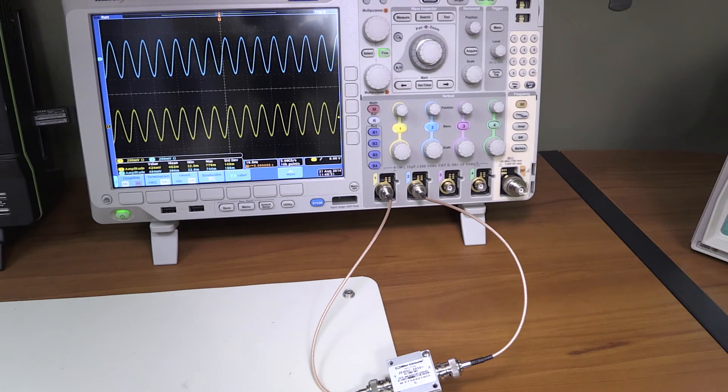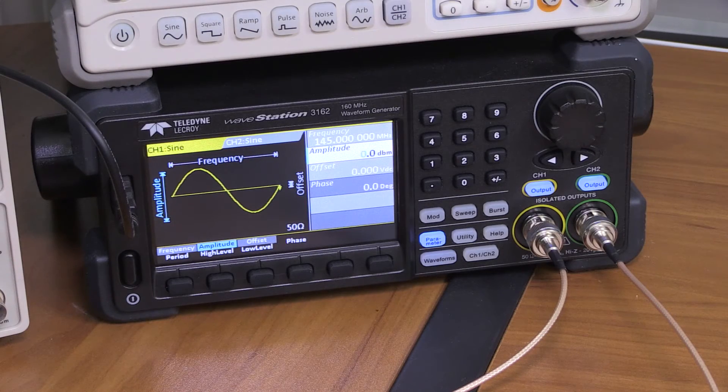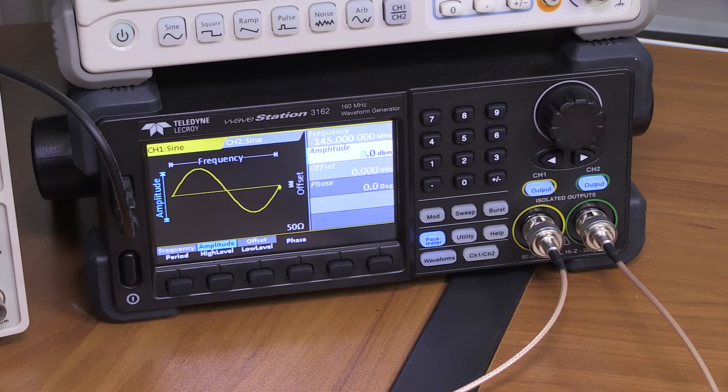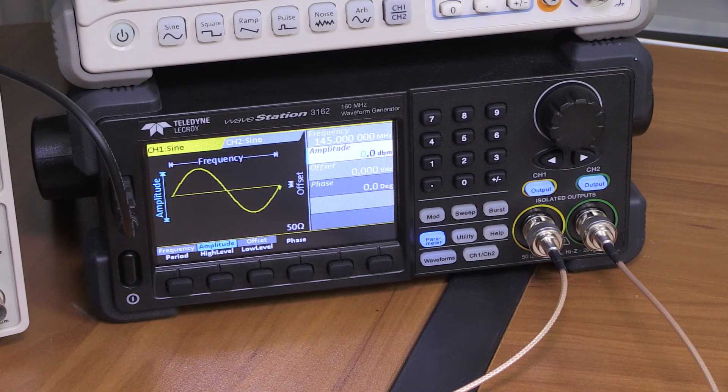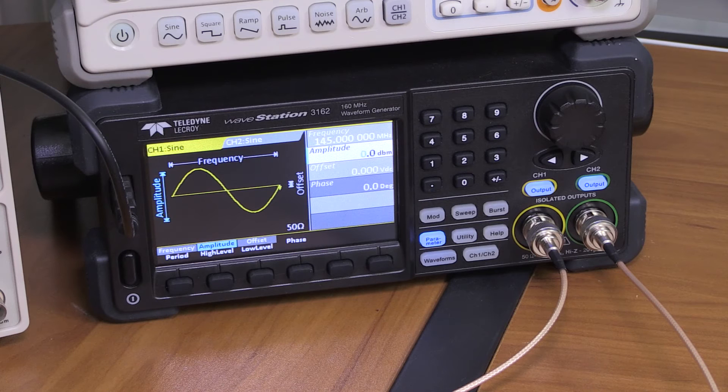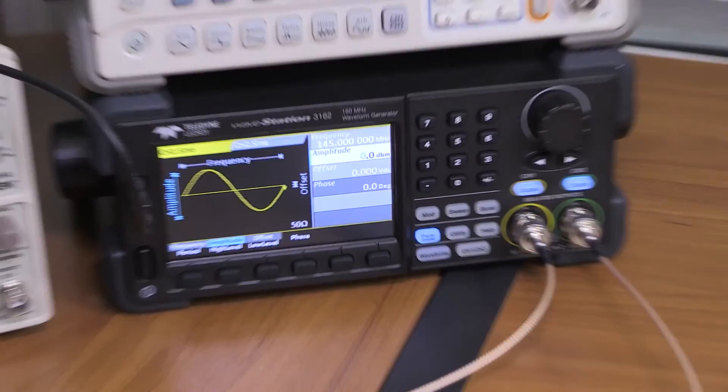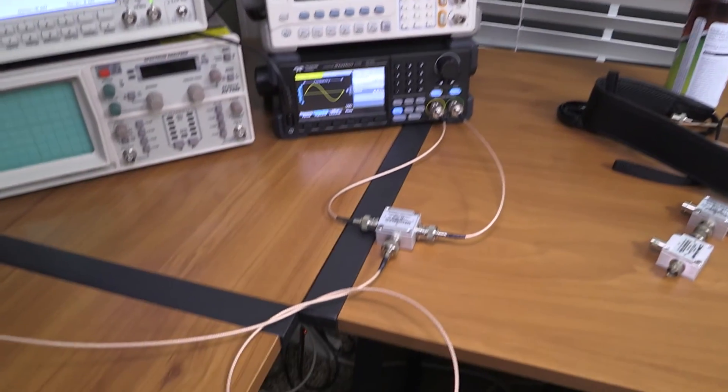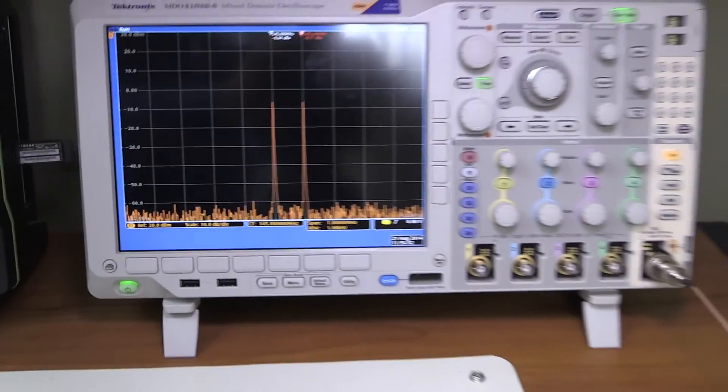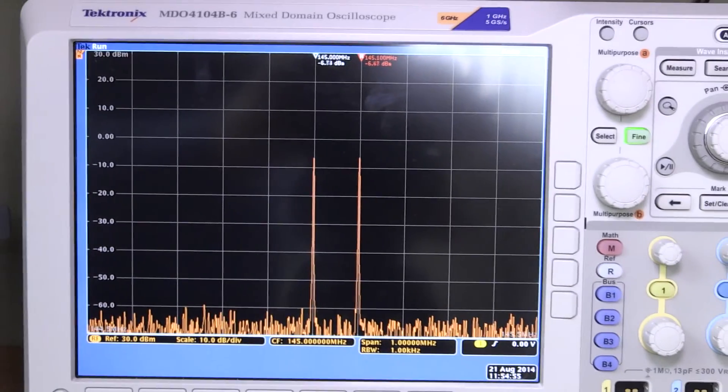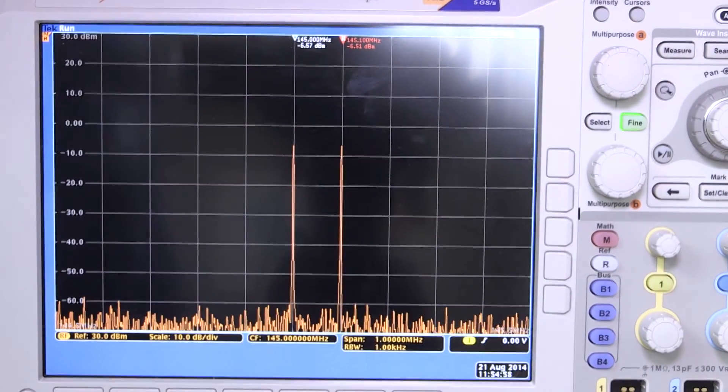All right, again I'm using the wave station 3000 here to generate two signals. On channel one I'm generating the 145 megahertz signal that we've used previously, and I added a 145.1 megahertz signal on channel two. The signals both have an amplitude of zero dBm as displayed here. From channel one and two, I'm going directly into the splitter ports and via this nicely curled coax into the MDO 4000, and this time I'm using it in spectrum view.